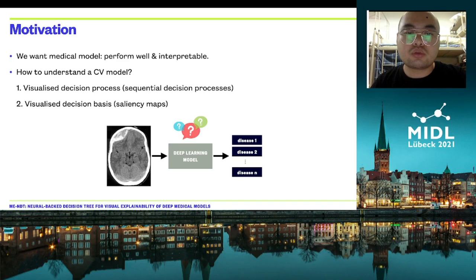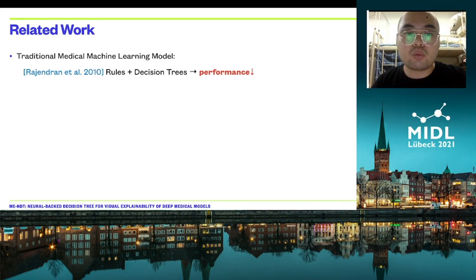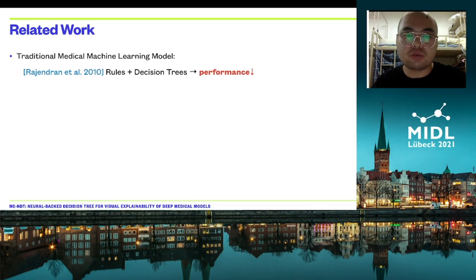To increase the explainability of such models, in this work we explore recent advances in explainable computer vision and propose a model that both visualizes the decision process and the decision basis through saliency maps. In the literature, there are several works that offer interpretability. For instance, because of their tree structure, decision tree-related models are inherently interpretable.